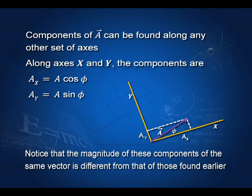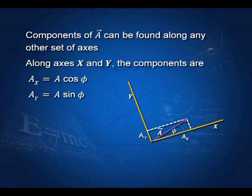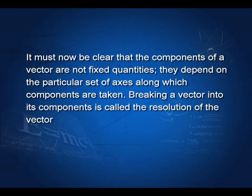Why do we find components? When you derive the expression for the time period of a simple pendulum, you have to resolve the vertical downward vector g into components. One component cancels the tension in the string and the other component gives the force which moves the bob, causing oscillations. Therefore, resolution is an important concept. When we take the components of a vector along a set of axes, this process is called resolution of the vector.